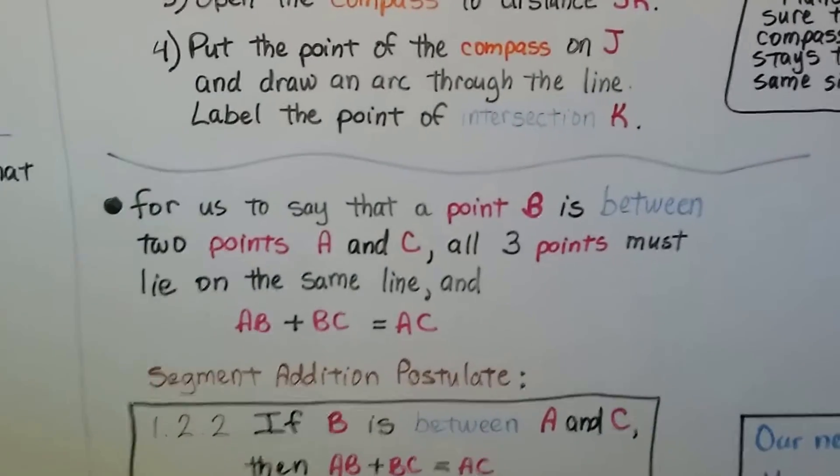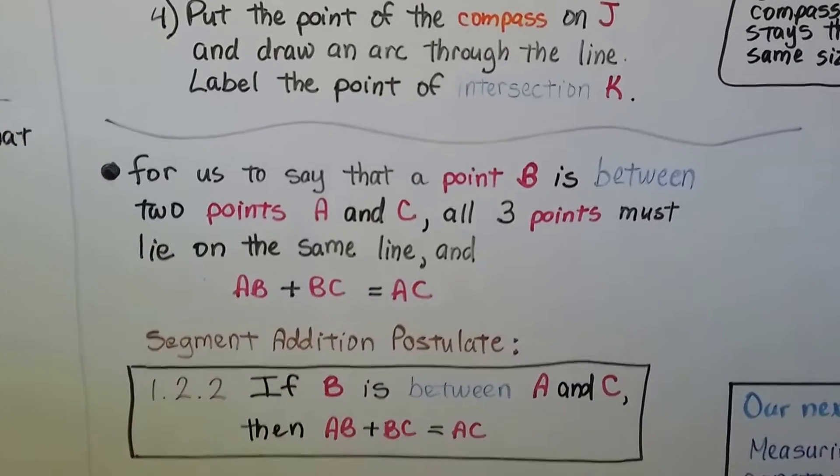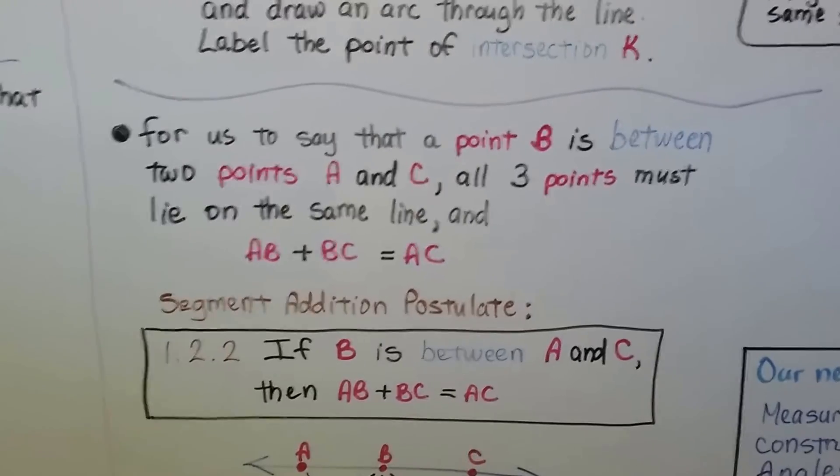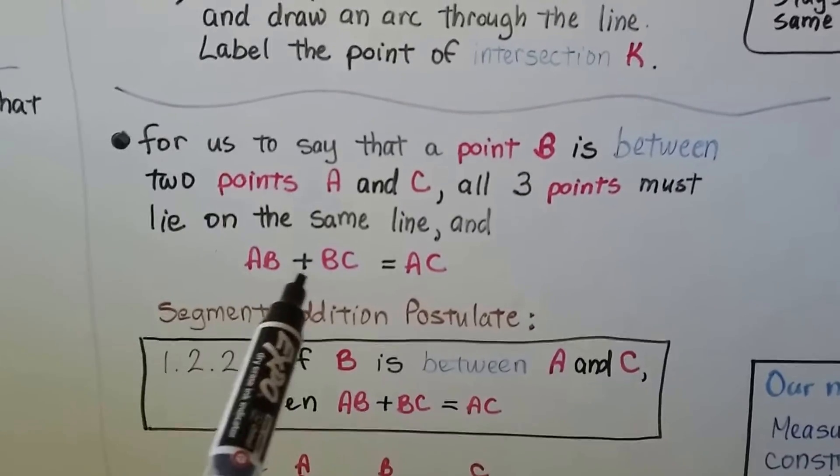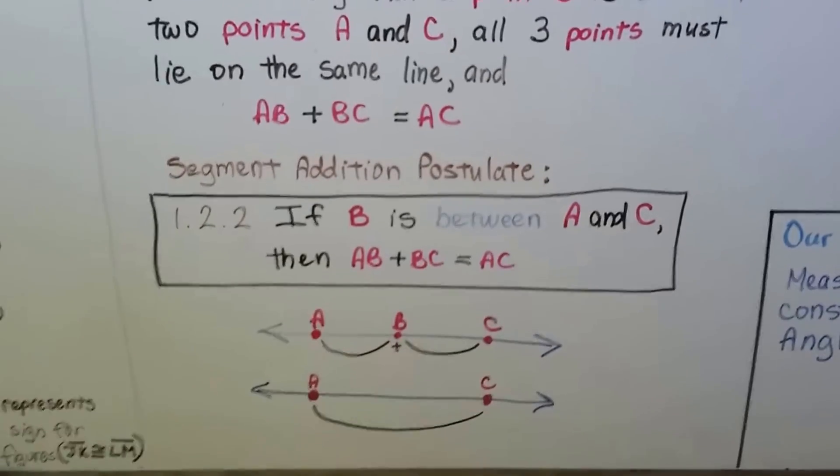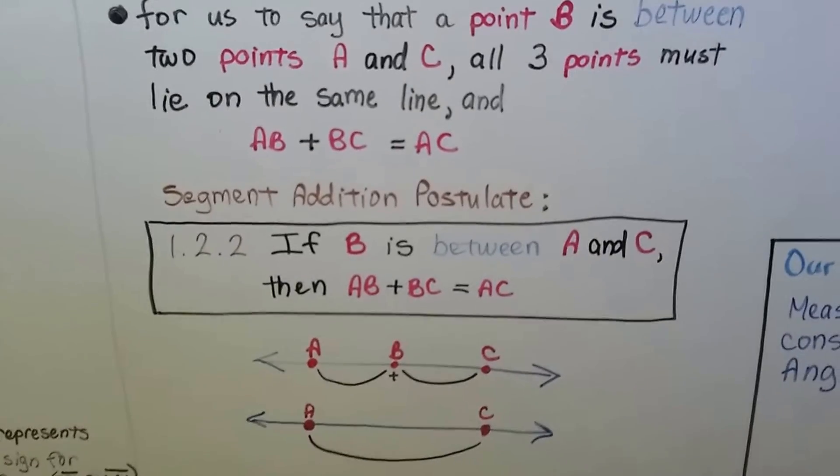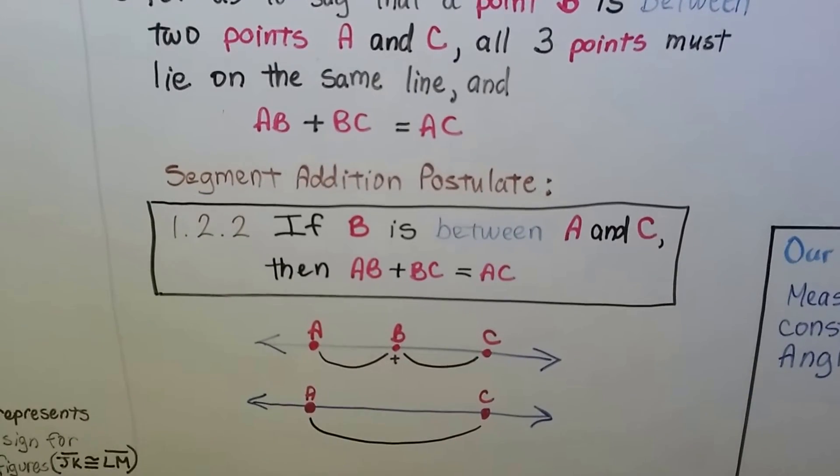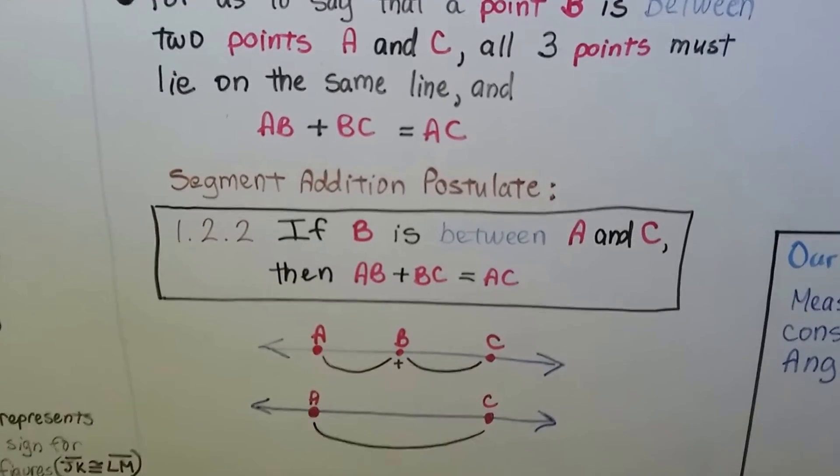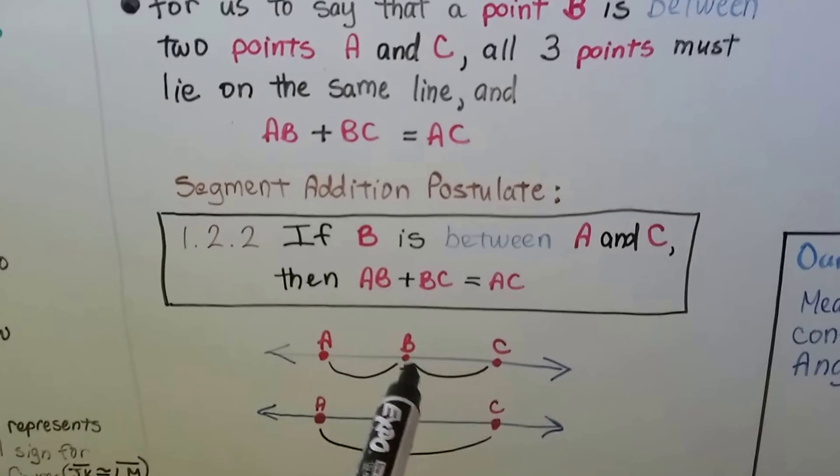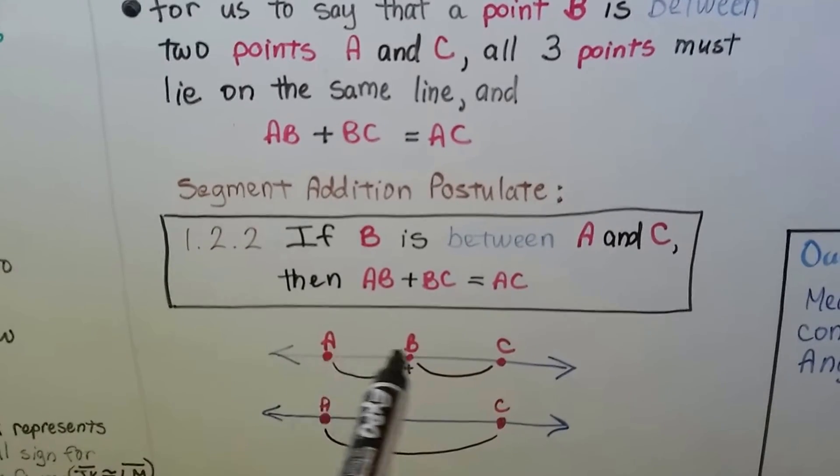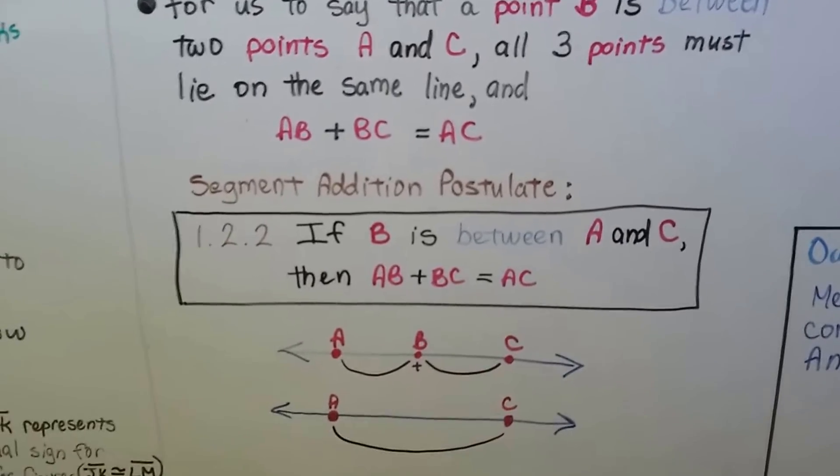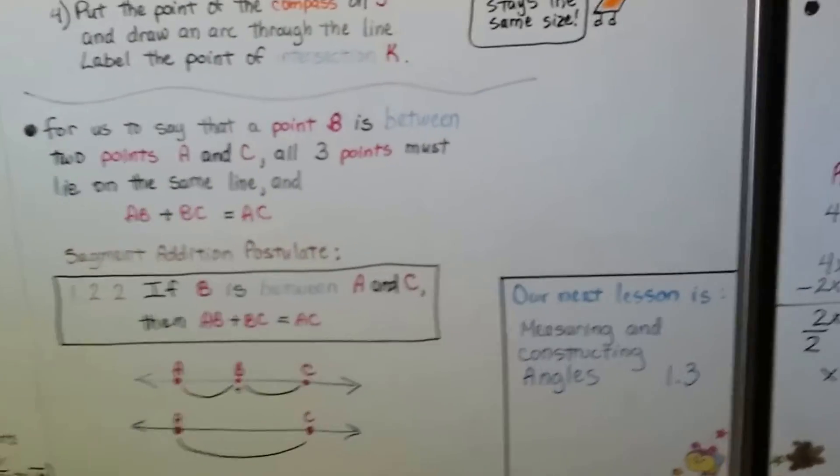For us to say that a point B is between two points A and C, all three points must lie on the same line. That means they're collinear, right? They're on the same line. So AB plus BC will equal AC. My drawings down here will help you. This is the segment addition postulate. You should write this down in your spiral also so that you can use it for your proofs later on. If B is between A and C, then AB plus BC equals AC. So B is in between A and C. We can see that. That means AB, this distance, plus BC, this distance, is equal to the whole thing AC. That makes sense, doesn't it? It's kind of common sense. So that's the segment addition postulate.